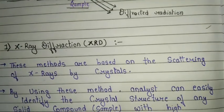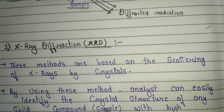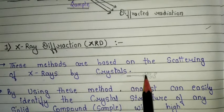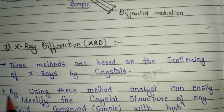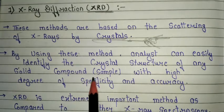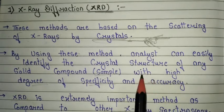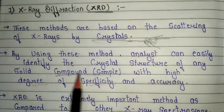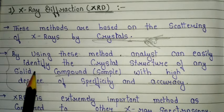X-ray diffraction is also called XRD. This method is based on the scattering of X-rays by crystals — the sample is used in crystal form. When X-rays are scattered by a crystal, we get radiation called X-ray diffraction. Using this method, an analyst can easily identify the crystal structure of any solid compound or sample with a high degree of specificity and accuracy.